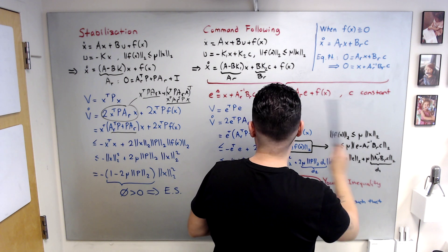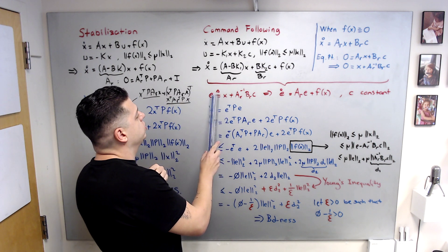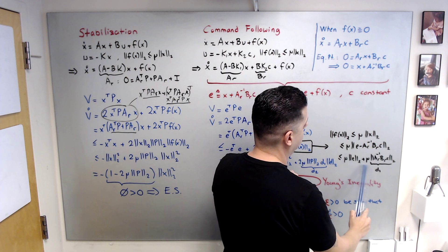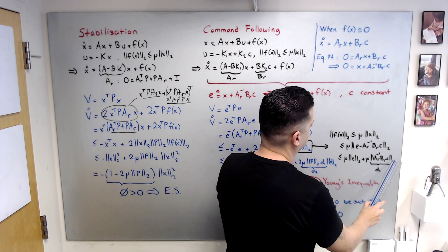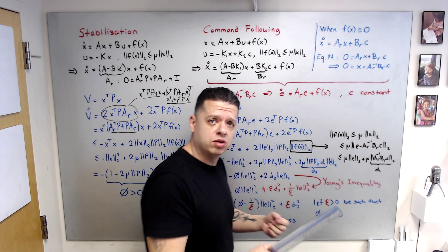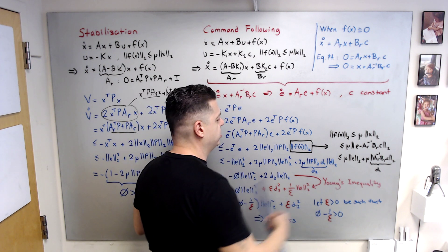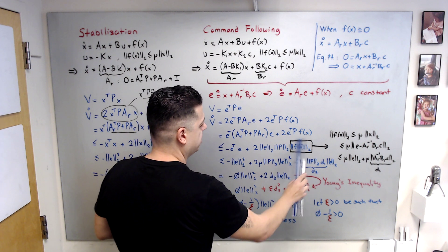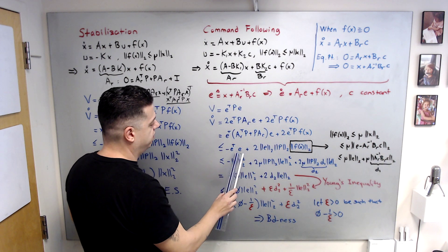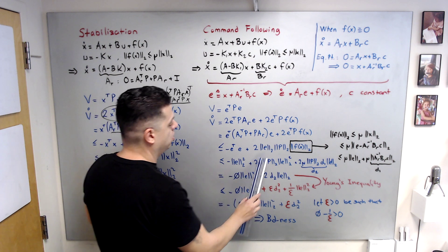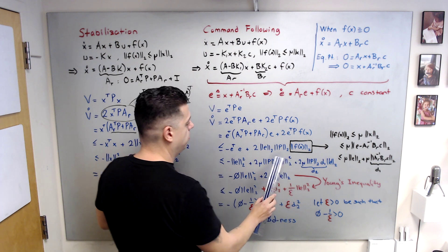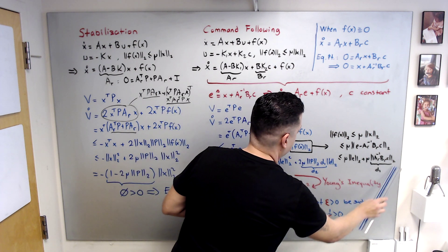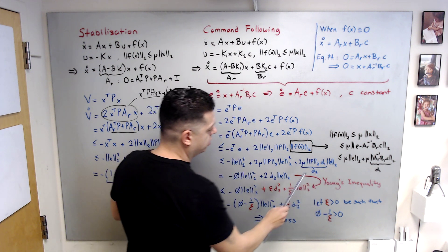Instead of x, I write x = e minus the equilibrium term, so norm(x) ≤ norm(e) + mu * norm(equilibrium term). The second part is a bounded constant I call d1. Upper bounding f gives mu*norm(e) + mu*d1. Inserting this, we get: minus norm(e)^2 plus 2*mu*norm(P)*norm(e)^2 (from the first product) plus a cross term involving d1, which I call d2.